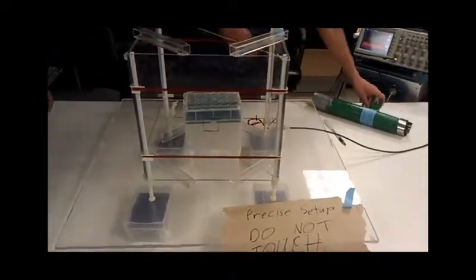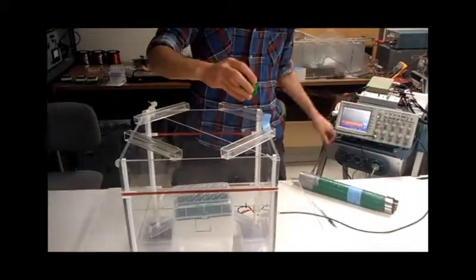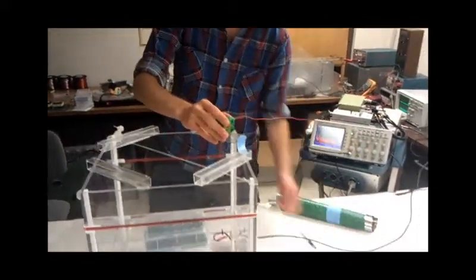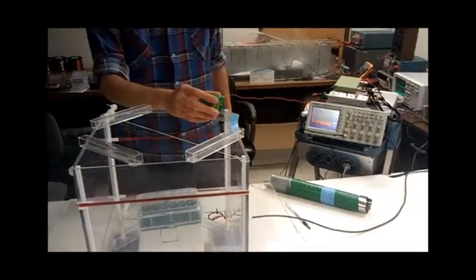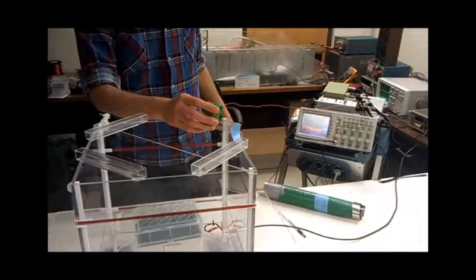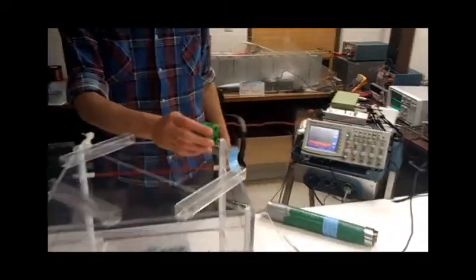And then you just put the probe directly in the center, which my cable's not long enough right now, and you turn on a field, or you turn on a current, create a field. You know what field you're creating. You can measure it on the oscilloscope and calibrate it that way.